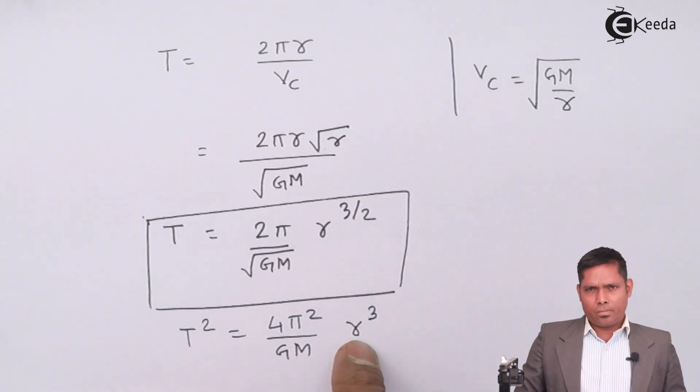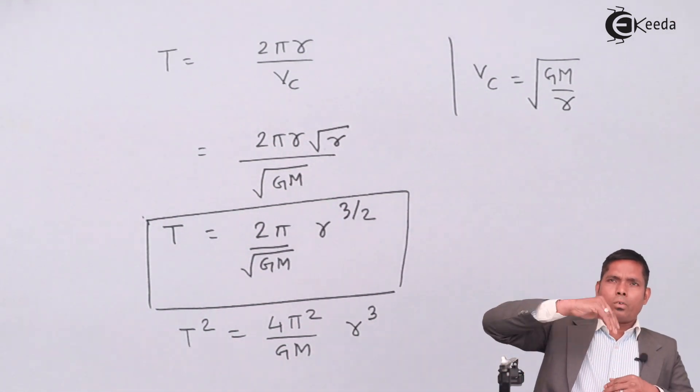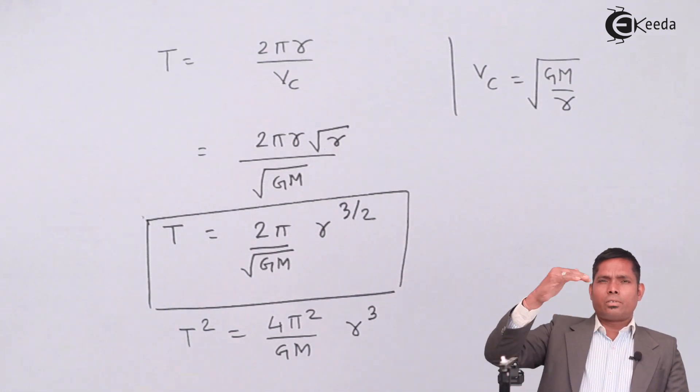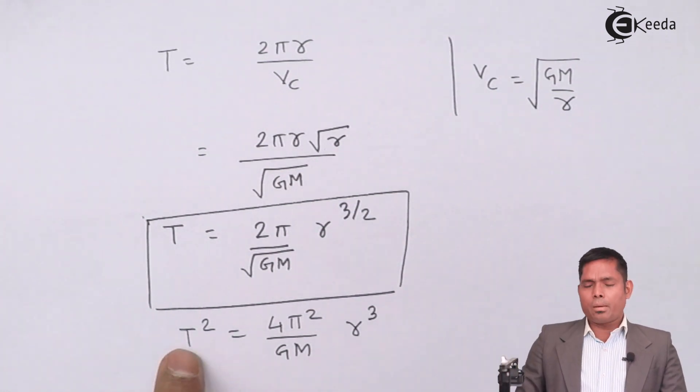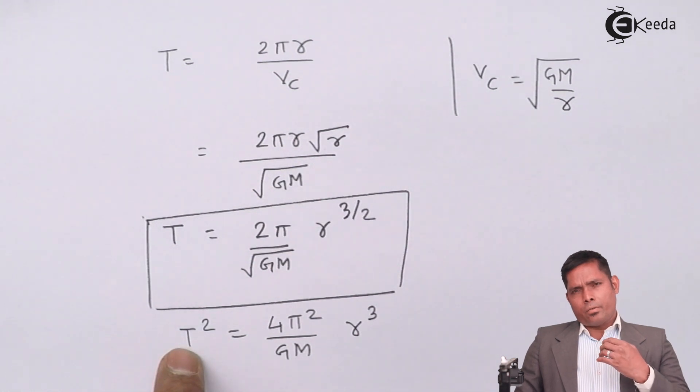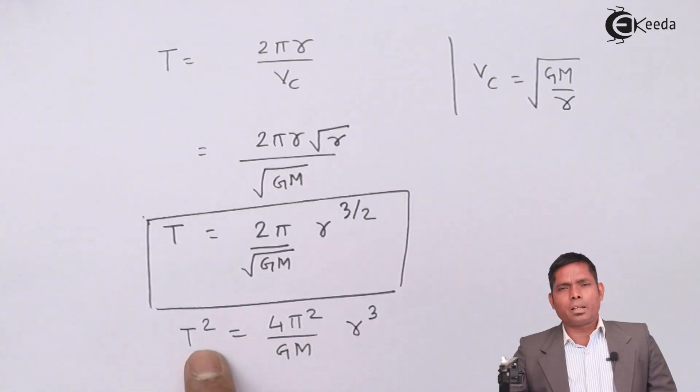That means as you move away from the center of the Earth, that means as the radius increases, time period will also increase. So those satellites which are very far away from the Earth will have greater time period.